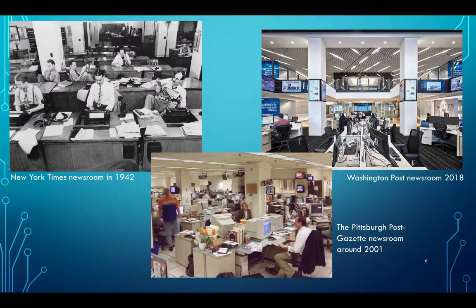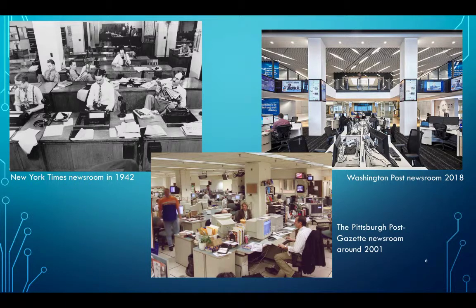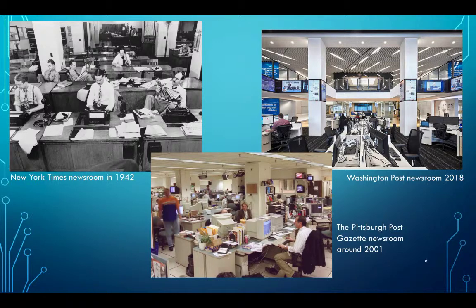Here we can see the evolution of the typical newspaper newsroom over the years. On the left, we have the New York Times in 1942, where there are no computers and the main tools used were the telephone and the typewriter. We have the Pittsburgh Post-Gazette newsroom around 2001 with the use of computers — you can see the large CRT monitors. On the right, we see the Washington Post newsroom in 2018, which is an improvement and development of the computer-based journalist newsroom.